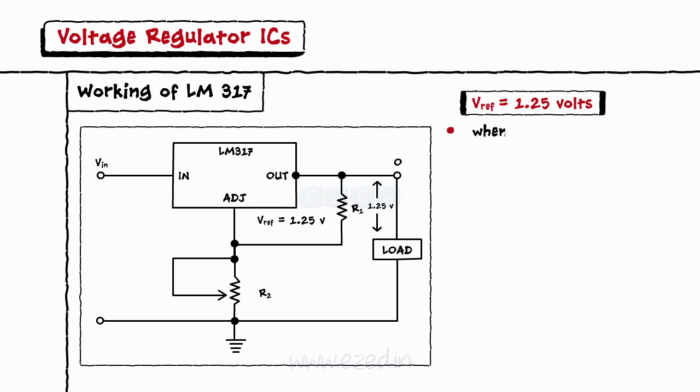Thus, when R1 is constant and reference voltage is constant, current IR1 always remains constant. Thus, resistor R1 is called as the current set resistor.